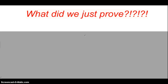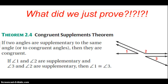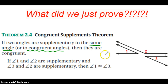Now, some people ask what we just proved. Here is the congruent supplements theorem — it might be helpful to write this in your notebook. The theorem has two parts, which really come in handy in proofs and will shorten them tremendously. These theorems are like little shortcuts: once you prove them, you can use them. The congruent supplements theorem states that if two angles are supplementary to the same angle or to congruent angles, then they are congruent to each other.